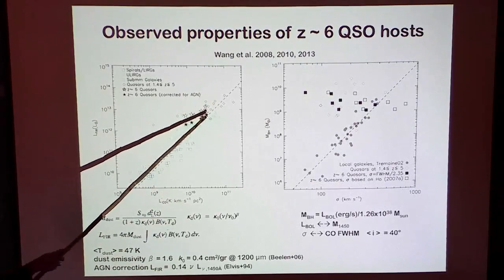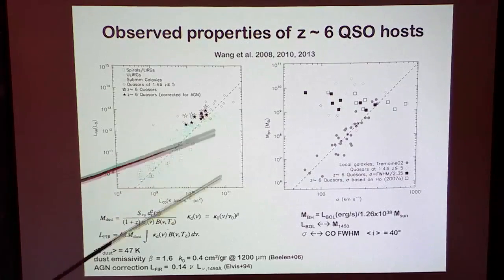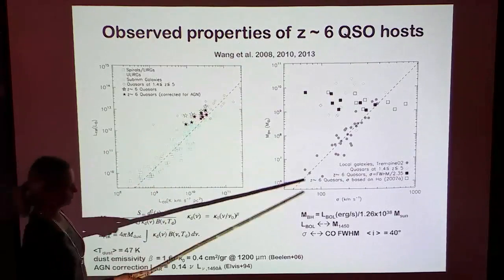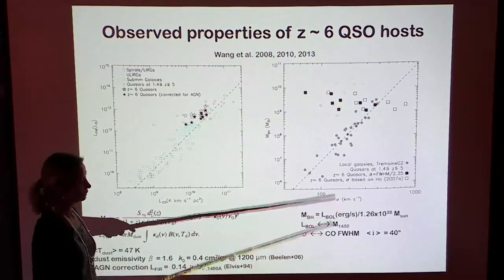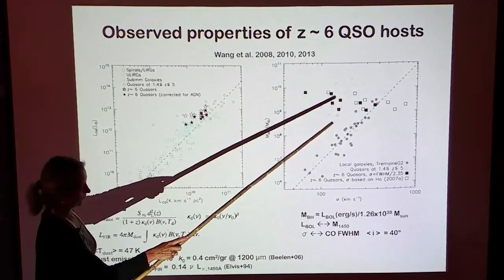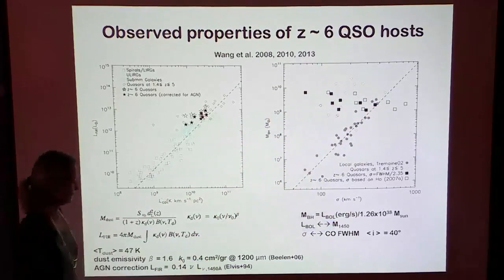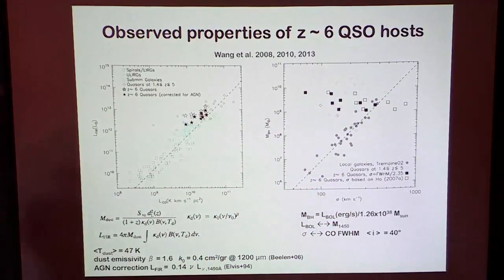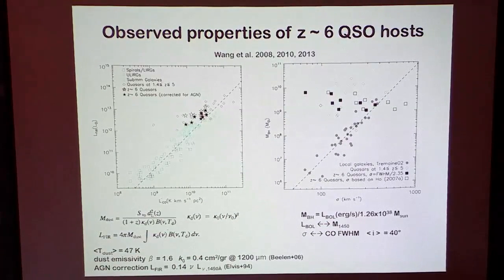Here you can see the far-infrared luminosity as a function of the CO luminosity, and the high-redshift quasars are shown here as stars. And again this is a different plot: the black hole mass as a function of the velocity dispersion, where the dark and empty squares are the observational data.